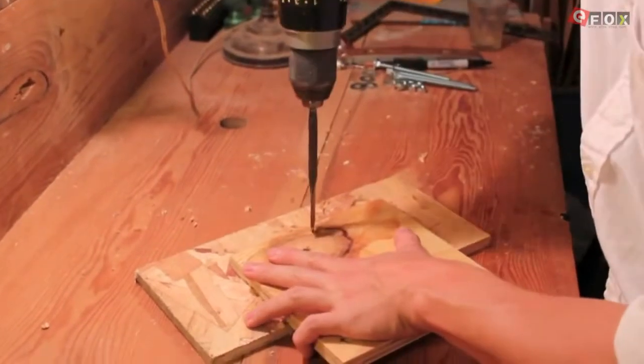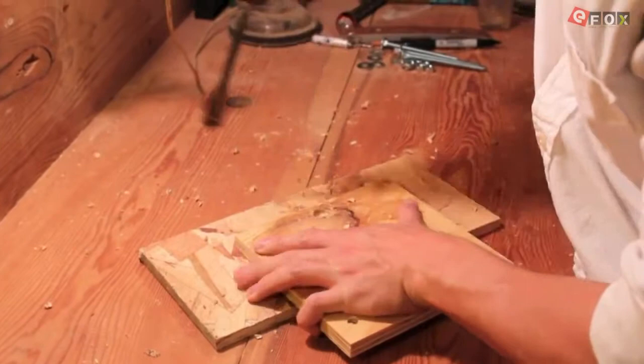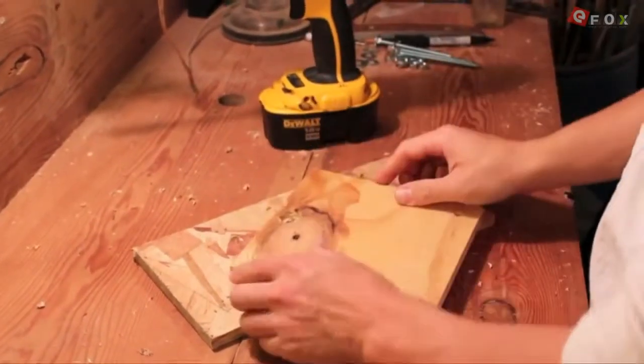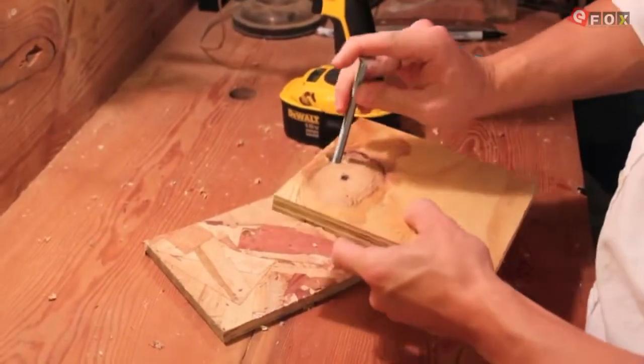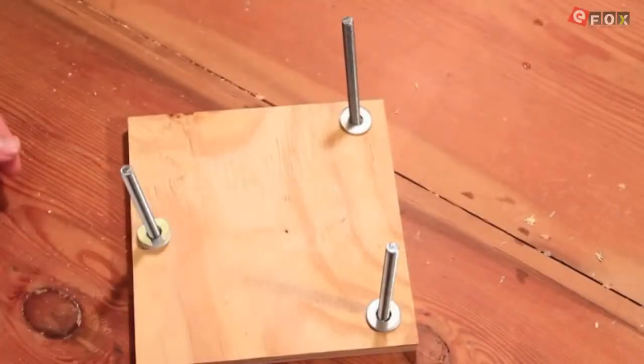In order for the microscope to sit flat, you will need to countersink the bolt holes underneath the base. After inserting the bolts, flip the base over and add washers and nuts to secure the bolts to the base.